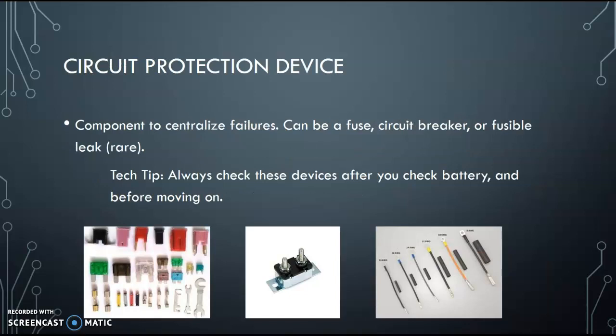And then we have circuit protection device. These components basically centralize failures. It could be a fuse, circuit breaker, or fusible link. Down in the picture here at the bottom, you see on the left, those are various fuses. We have old glass fuses, porcelain fuses. These are like European cars. These are old American cars. Here's some more modern fuses right here. Basically, again, these are kind of weak links. They're designed to blow under a certain amount of current. What that does is it centralizes the failure and also prevents the harness from melting.